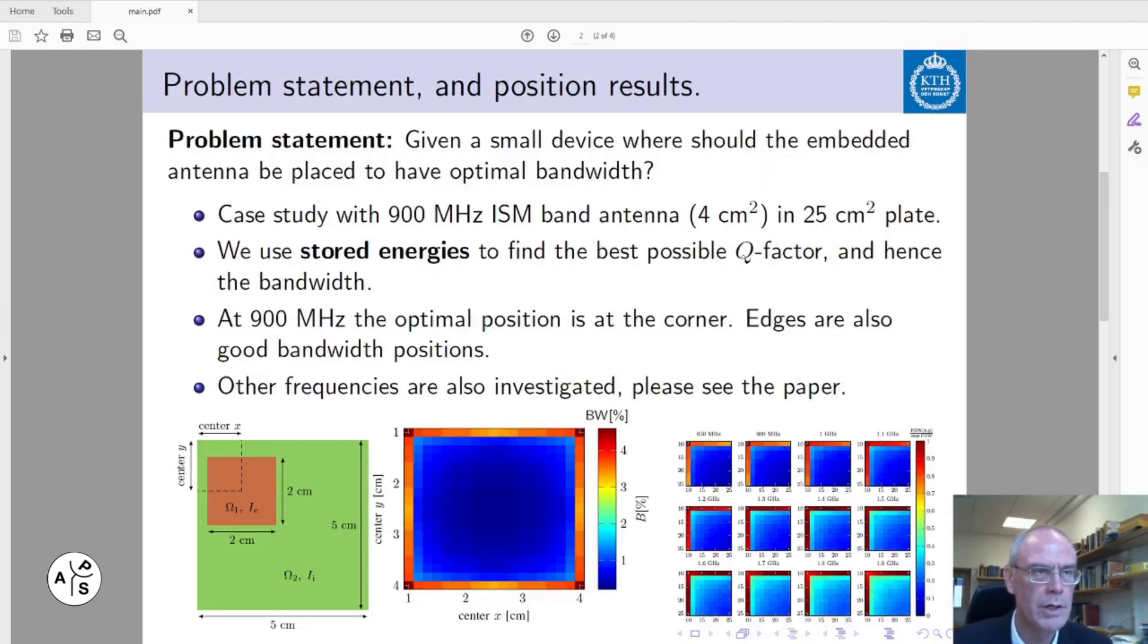In this paper we are concerned with the question of where the best bandwidth position is for any arbitrary antenna. We consider a small 5x5 centimeter terminal with a 2x2 centimeter embedded antenna.